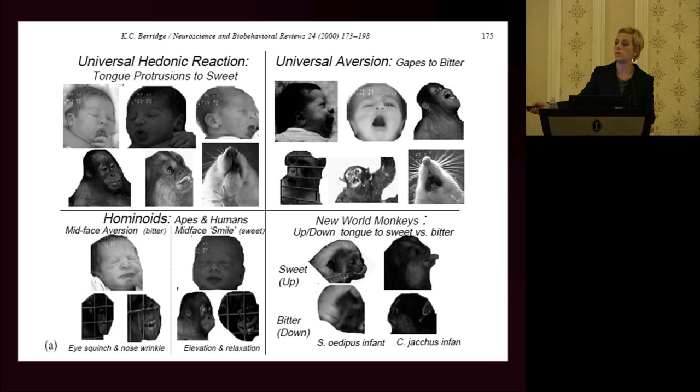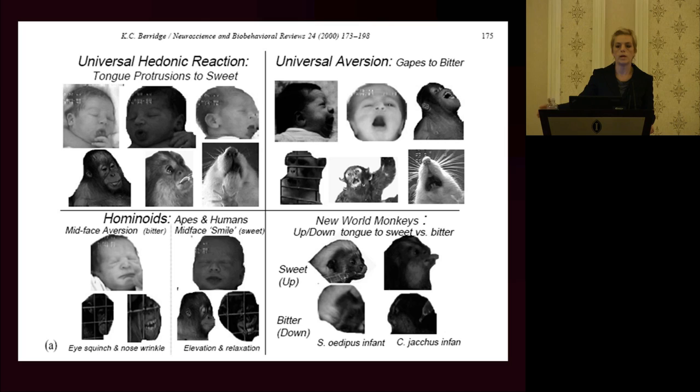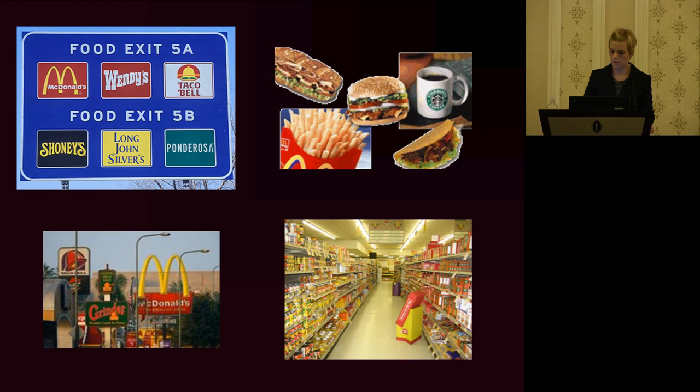We have tongue protrusions to sweet things, whereas we have universal gapes to things that are bitter. We exhibit these reactions to sweet and bitter even in neonates and during fetal development — tongue protrusions either up or down to substances that are sweet and bitter. These are thought to be innate reactions, protective against toxins in our environment while helping us find sources of carbohydrates and calories.